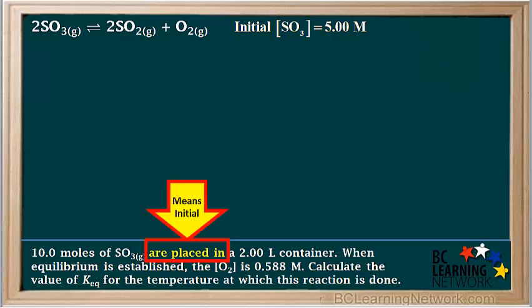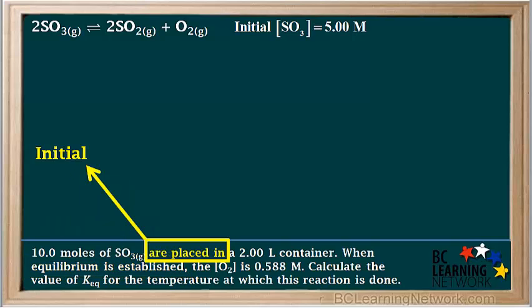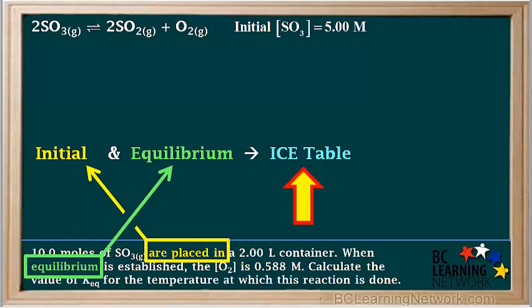We will make a note of that. The words 'are placed in,' 'are added to,' or 'are injected into' all refer to what we are starting with, or initial information. When it says equilibrium is established, it means that any quantities given after that are at equilibrium. A system always starts out as what we call its initial state, then it will naturally react until it reaches a state of equilibrium. As this is happening, the concentrations of the reactants and products will be changing. When we are given initial quantities and one or more quantities at equilibrium, then we create what we call an ICE table or ICE chart.